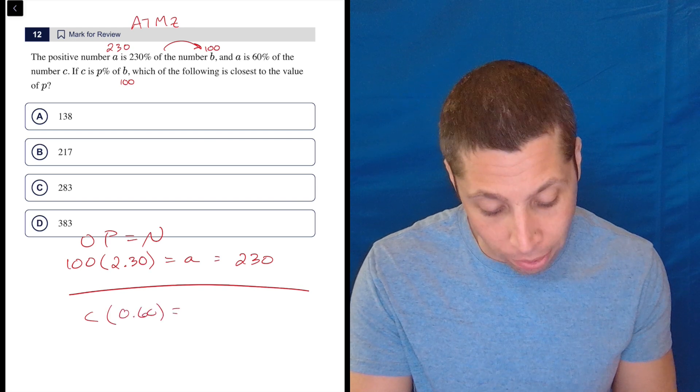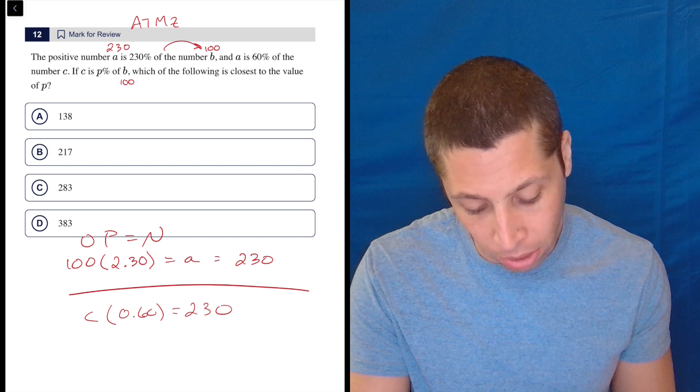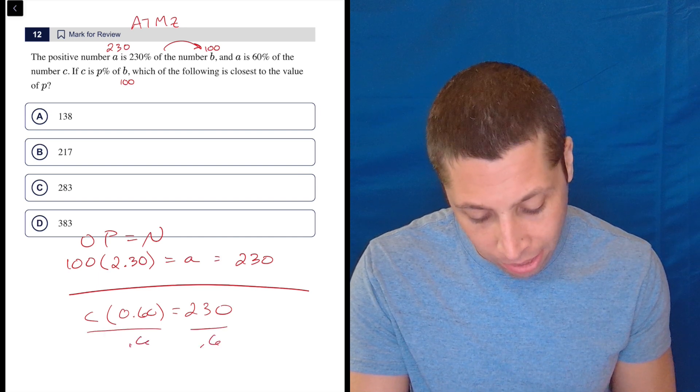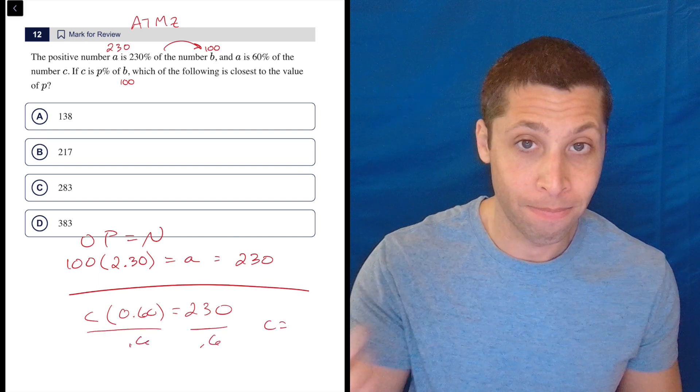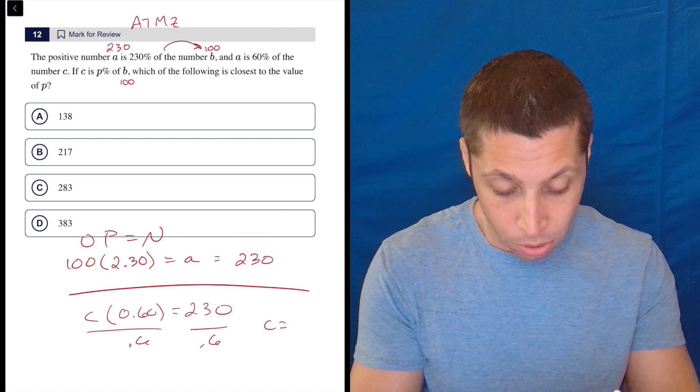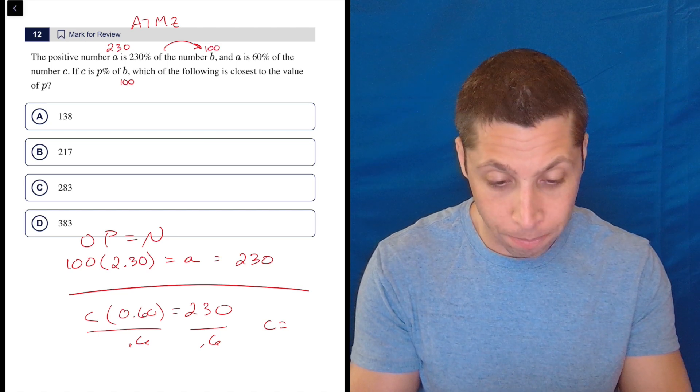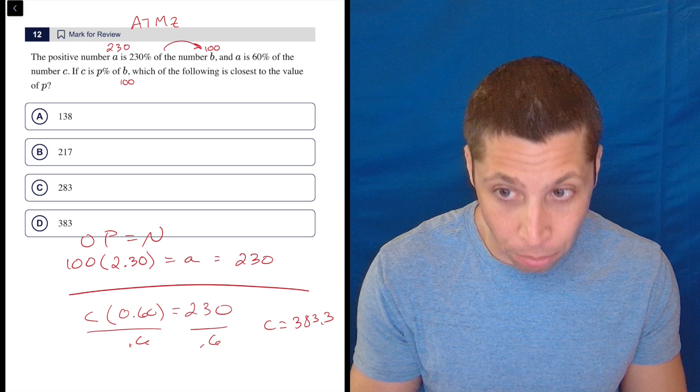60%. We're not doing any increases or decreases. And A is our new value. And so that we know is now 230. So we're going to divide by 0.6 and we're going to get that C is, regular calculator time, 230 divided by 0.6 is 383.3.